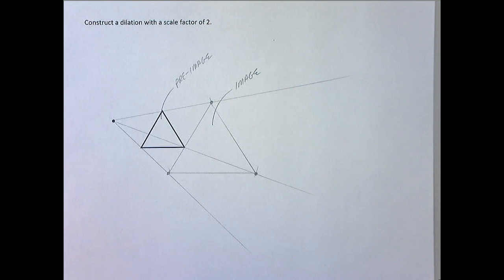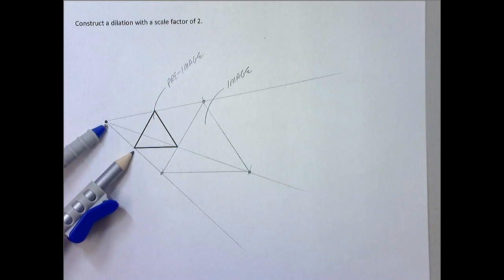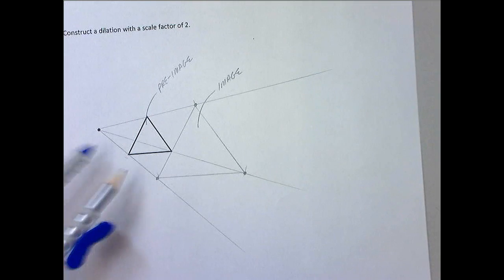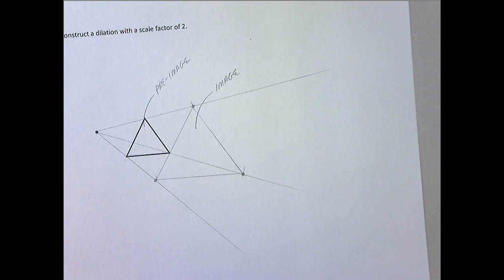All right. So that's it for constructing a dilation with a scale factor of two. If you had to do a scale factor of three, then when you were making your marks, instead you would just have to go one, two, and then do one more. For four, you'd have to do one, two, three, four. I think you get the idea.